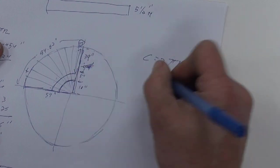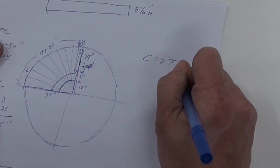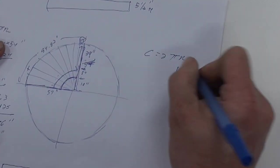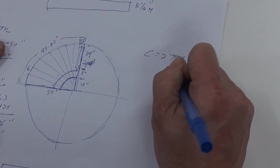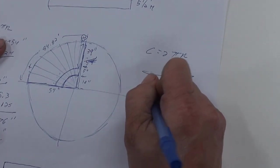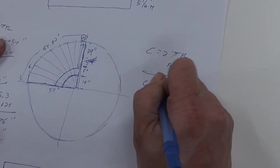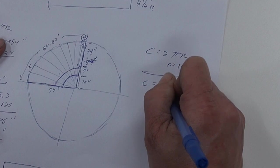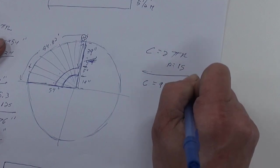The r is equal to 15. So when you calculate that out, that would mean the full circumference equals 94.25 inches.